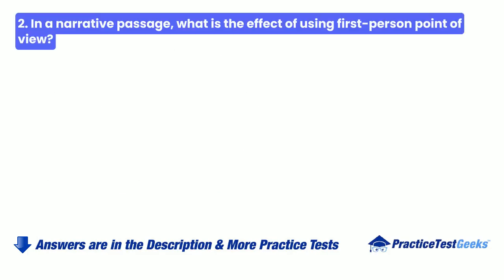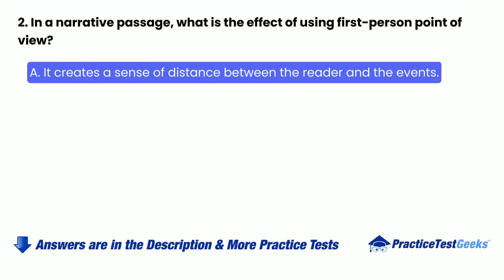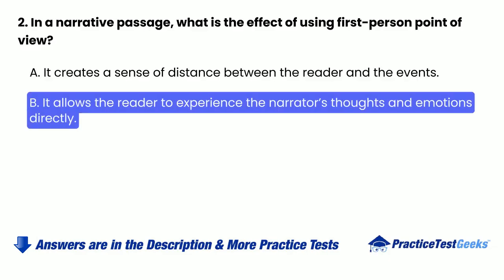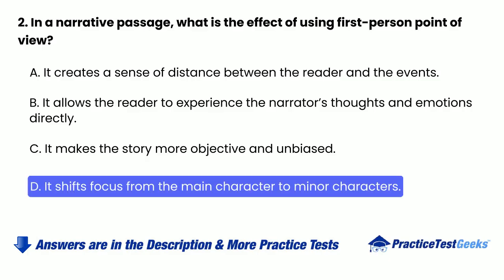2. In a narrative passage, what is the effect of using first-person point of view? A. It creates a sense of distance between the reader and the events. B. It allows the reader to experience the narrator's thoughts and emotions directly. C. It makes the story more objective and unbiased. D. It shifts focus from the main character to minor characters.